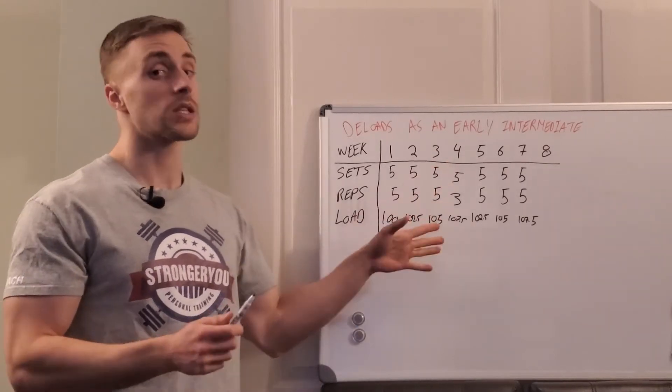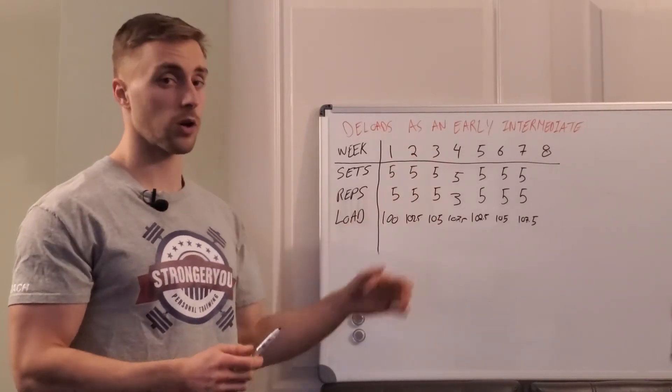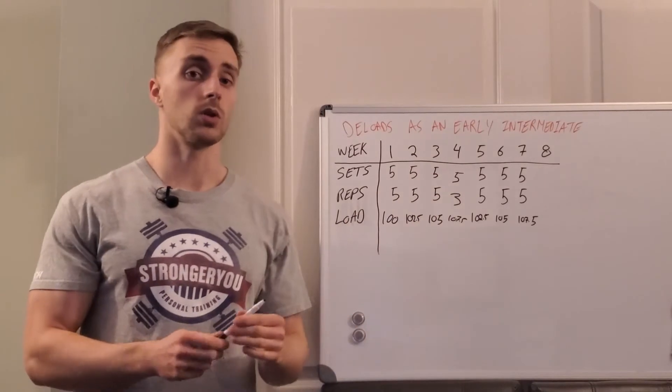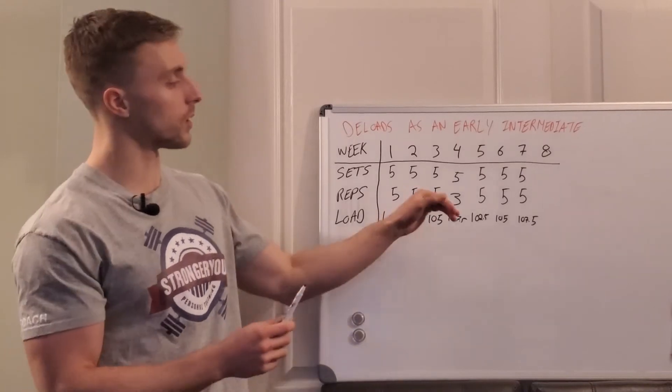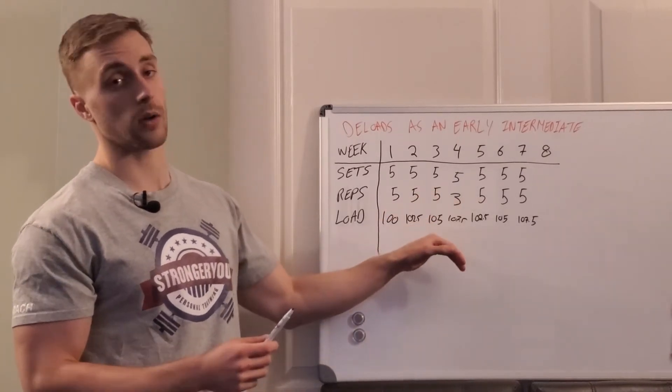But the concept that we're talking about here is really just reducing volume by dropping the reps. You're going to reduce your perceived exertion as well and your proximity to failure. So if you're doing sets of five at 105 on week three...